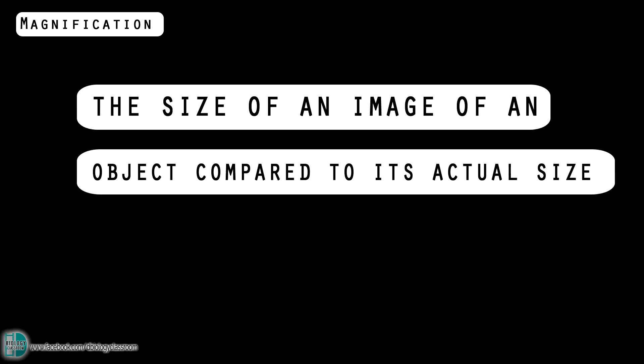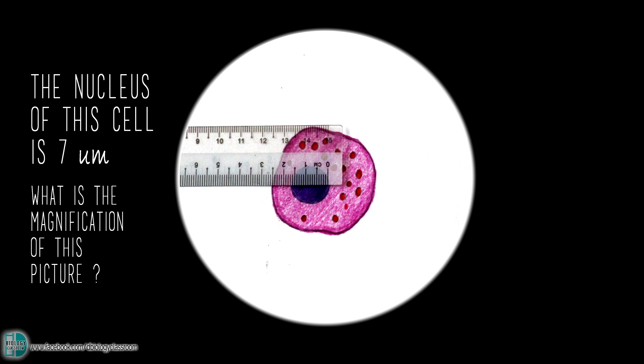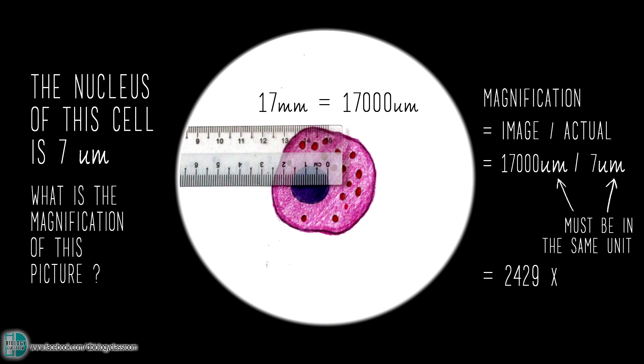Magnification is the size of an image of an object compared to the actual size. It is calculated using the formula magnification equals image size over actual size. Let's say the nucleus of this cell is 7 micrometers. How big is this drawing compared to its actual size? First, measure the size of the image. It is 17mm. Convert this value to micrometers. Then divide it by the actual size and you will get the magnification of the drawing.